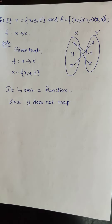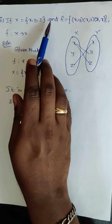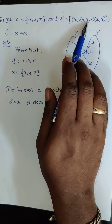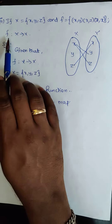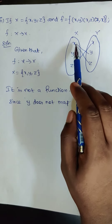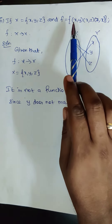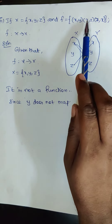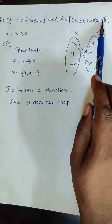Next we have the second substitution. If capital X equals {x, y, z} and f is from X to X, the relation for f is given as the pairs (x,y), (x,z), and (z,x).